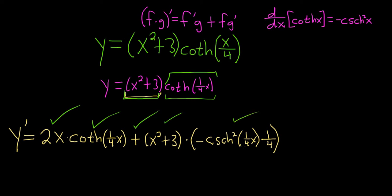We use the chain rule. The last thing to do is pull out this negative one-fourth. So y prime is equal to 2 times x hyperbolic cotangent of one-fourth x.